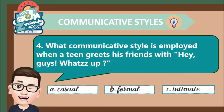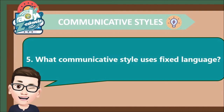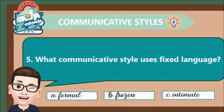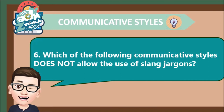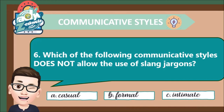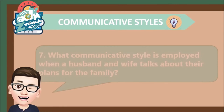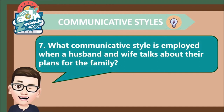Number five. What communicative style uses fixed language? A. Formal B. Frozen C. Intimate. Number six. Which of the following communicative styles does not allow the use of slang jargons? A. Casual B. Formal C. Intimate. Number seven. What communicative style is employed when a husband and wife talk about their plans for the family? A. Casual B. Formal C. Intimate.